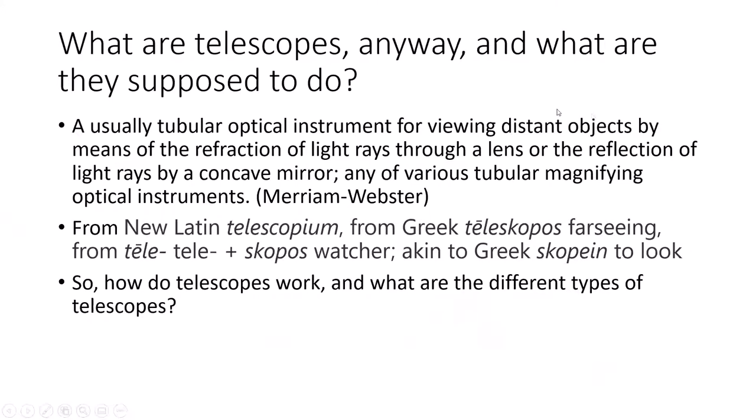So what are telescopes and what do they do? Merriam-Webster tells us a telescope is a usually tubular optical instrument for viewing distant objects by means of the refraction of light rays through a lens or the reflection of light rays by a concave mirror — they should have said parabolic. The word comes from the New Latin 'telescopium,' originally from the Greek 'teleskopos,' meaning far-seeing.